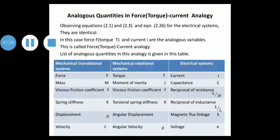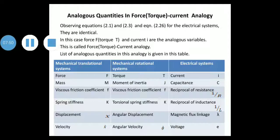Now we go for FI analogy. We observe equations 2.1 and 2.3 for mechanical systems and equation 2.26 for electrical systems and compare them. In this case, force F — which is torque T — and current I are the analogous variables. This is called the force-torque-current analogy. The list of analogous quantities is given in this table.